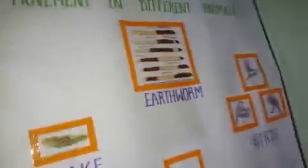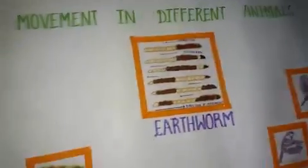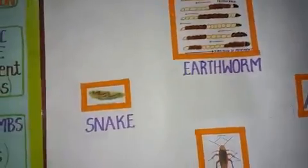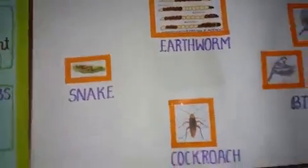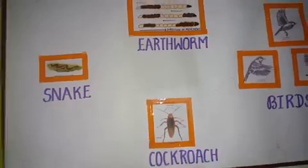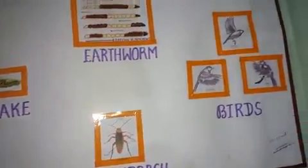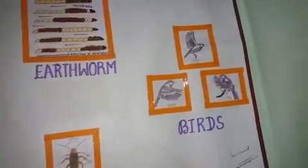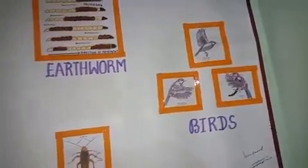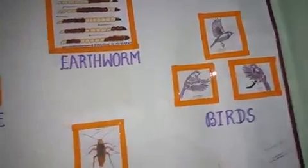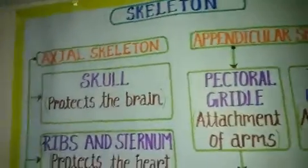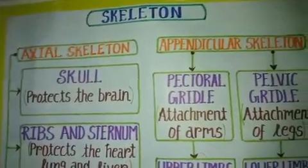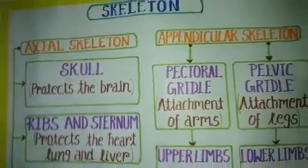The next chart is movement in animals, showing different animals. The earthworm uses muscle contraction to move. The snake uses a slithering movement. Cockroaches crawl. Birds fly.